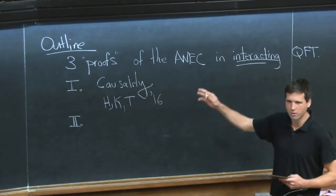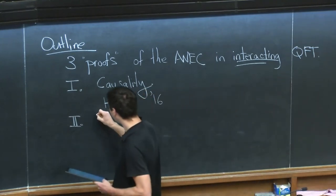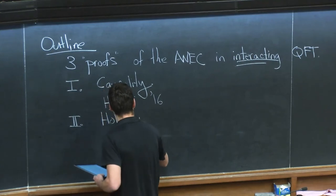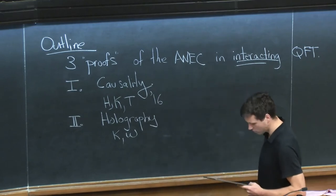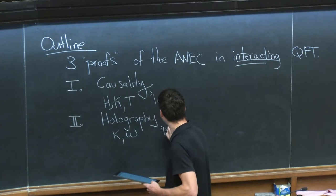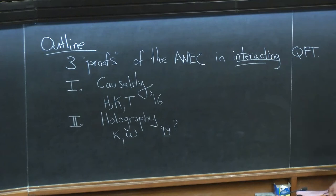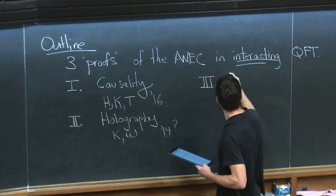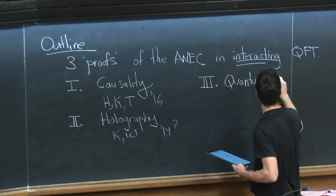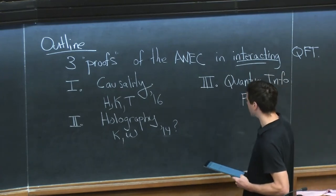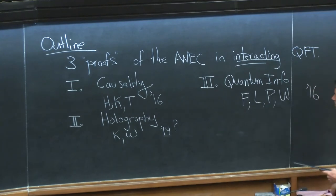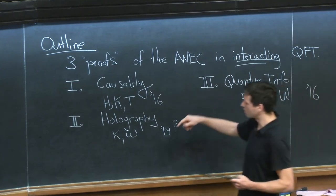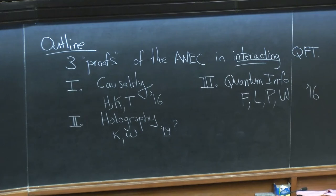The second method — and these are reordered for the lectures, not historically ordered — is holography, loosely based on a paper by Kelly and Wall from around 2014. The third is from the point of view of quantum information, based on a paper by Faulkner, Lee, Barkar, and Wong from 2016. Just come ask me for the full references, or I'll post some notes — all of the papers have 'null energy' in the title so they're not too hard to find.